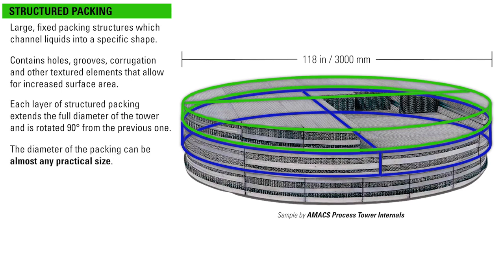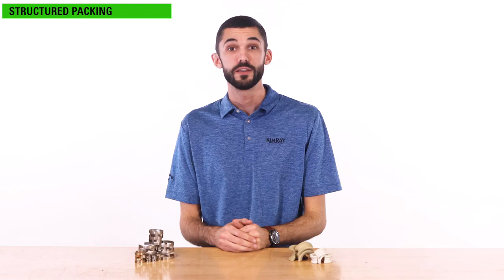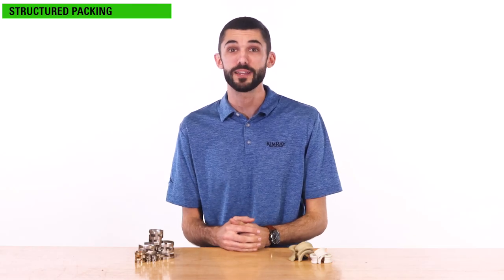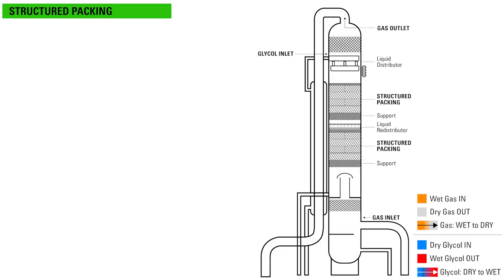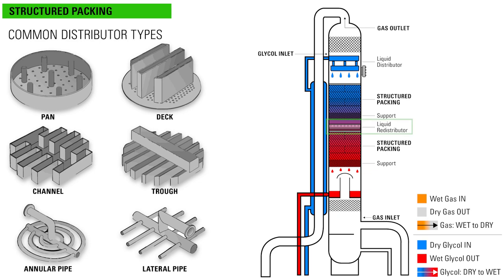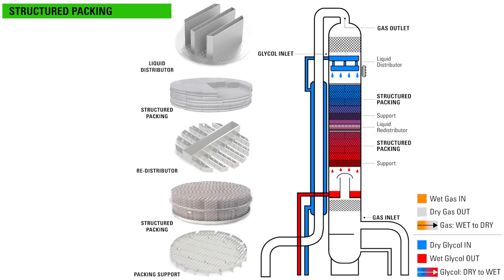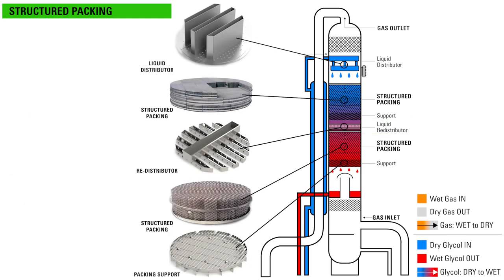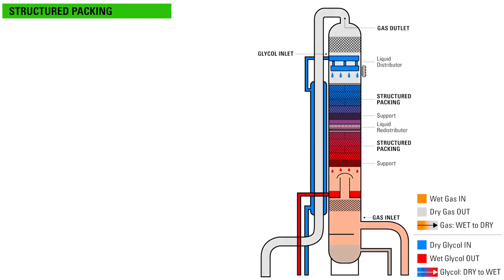The diameter of the packing can be almost any practical size. The glycol is distributed evenly at the top of the tower and flows down through the structured packing, coating the surface as it moves. Depending on the size of the tower, a redistribution tray may be used to evenly redistribute the glycol across the packing again. This prevents the glycol from channeling down only one side of the absorber. The natural gas enters the tower towards the bottom and travels upward, contacting the glycol as it makes its way down, which absorbs the water from the gas.